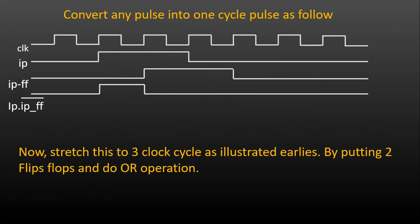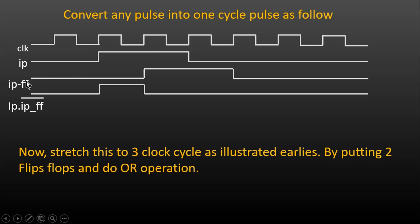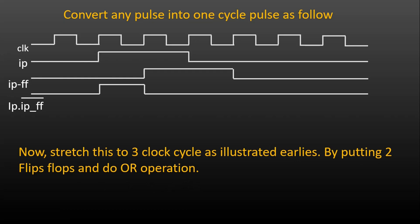Let me reveal it. The crux is: first, you have to convert whatever pulse is applied at the input into a single clock cycle pulse. Let me tell you how. This is the clock signal. This is the input — in this case, a two clock cycle pulse. We simply put one flip-flop at its input IP, giving a pulse delayed by one clock cycle — call it IP_FF1. Then we AND IP with IP_FF1 bar to get a one clock cycle pulse. Once we have a one clock cycle pulse, we can stretch it to three clock cycles by putting two flip-flops and doing the OR operation, as discussed earlier.